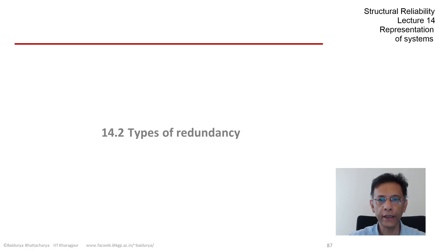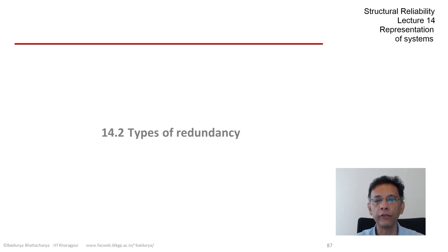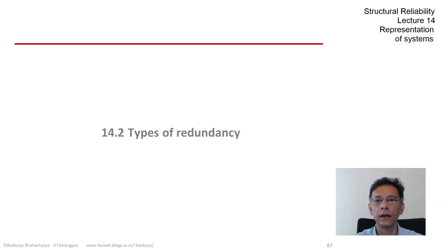Let's recap what we have done so far this week. We have defined reliability, we have discussed what makes a system reliability problem in terms of the elements, we have looked at how to set up a problem in reliability and how to represent a system in terms of its elements. We have also come across the term redundancy a few times.